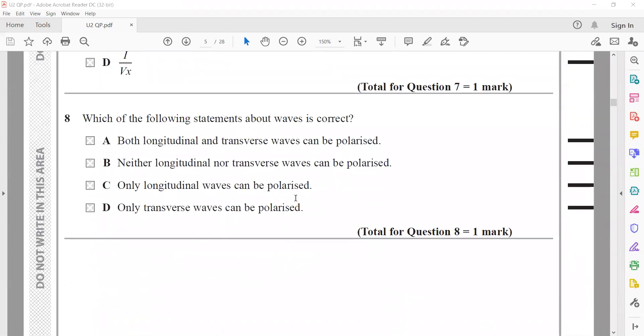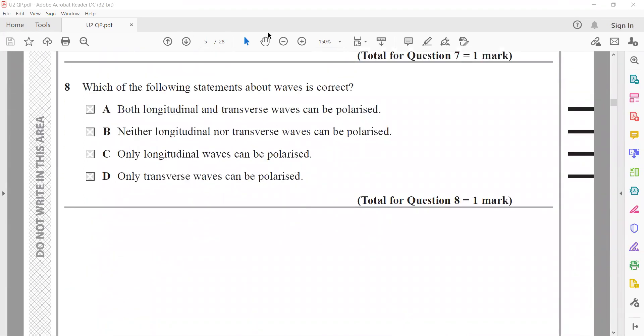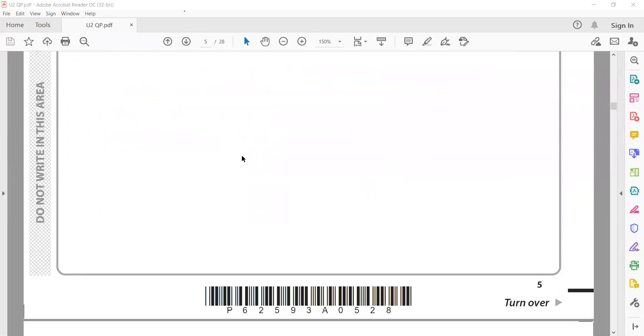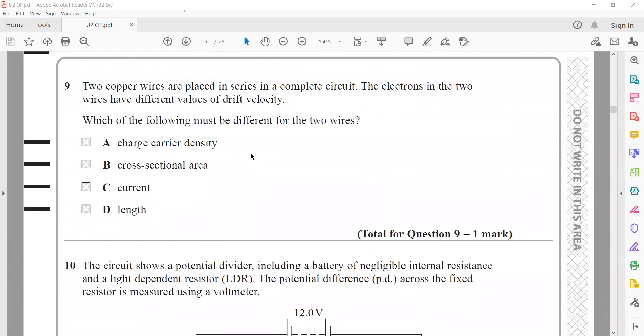Which of the following statements about waves is correct? Both longitudinal and transverse can be polarized? No, both cannot be polarized. Only transverse can be polarized. So D is the right answer. Polarization only happens for transverse waves. For longitudinal waves, the particles vibrate parallel in the same direction as the wave, so they cannot be polarized.